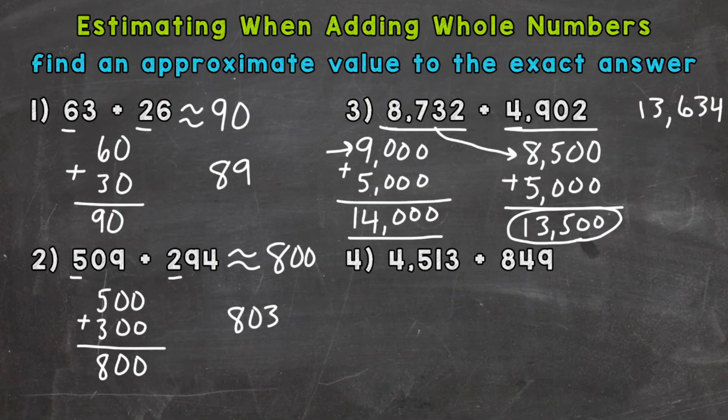On to number 4 where we have 4,513 plus 849. So just like number 3, I'll go through a couple of different strategies here. First one being front end estimation. So thousands and hundreds. So the first number there, 4,513 is going to round to 5,000.